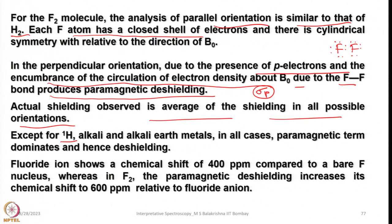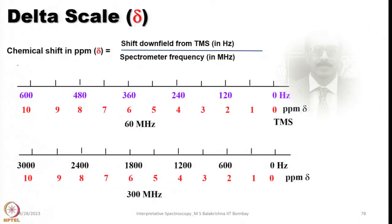Fluoride ions show a chemical shift of 400 ppm compared to the bare fluorine nucleus, whereas in F₂ the paramagnetic deshielding increases its chemical shift by 600 ppm relative to fluoride anion. This demonstrates a remarkable contribution from the σ_p term due to hindered circulation of electron density as a result of p electrons. This gives some idea about paramagnetic deshielding and diamagnetic shielding and also why 1H, alkali and alkaline earth metals have a short chemical shift range whereas other nuclei have a long range.